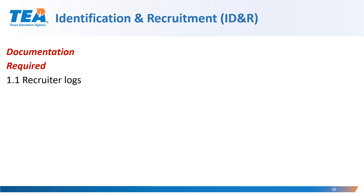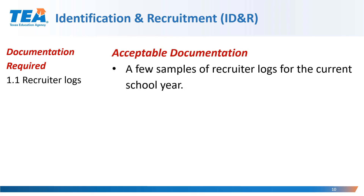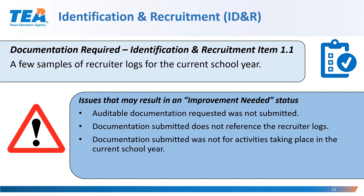Requirement 1.1 Recruiter Logs. The acceptable documentation for this requirement are a few samples of recruiter logs for the current school year. Some issues that may result in an improvement need status could include the following: applicable documentation requested was not submitted; documentation submitted does not reference the recruiter logs; or documentation submitted was not for activities taking place in the current school year.